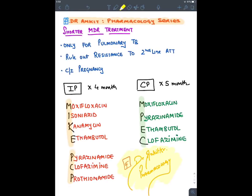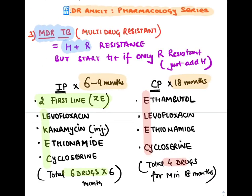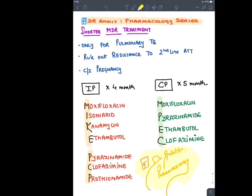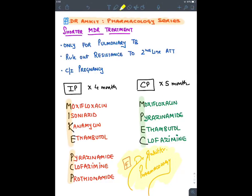In the shorter MDR regimen: intensive phase for 4 months — mnemonic MIC-PCP: moxifloxacin, isoniazid, kanamycin, ethambutol, pyrazinamide, clofazamine, and prothionamide. Continuation phase is MPEC. We remove isoniazid, kanamycin, and prothionamide in the continuation phase. Total treatment duration is 9 months.